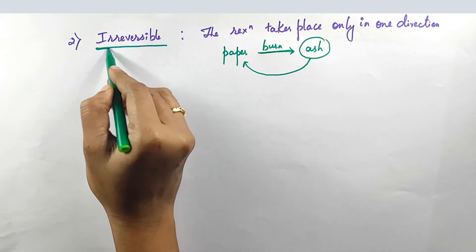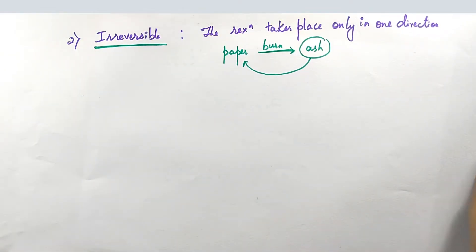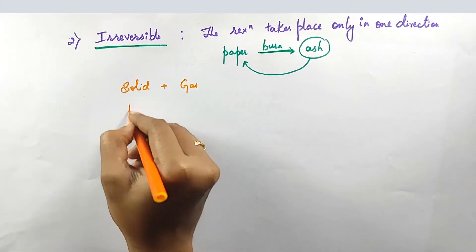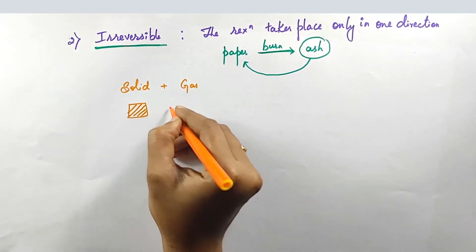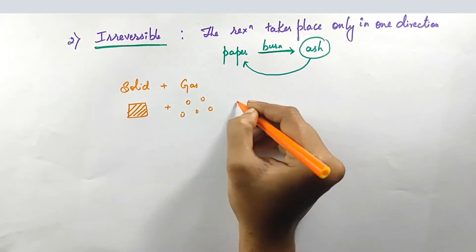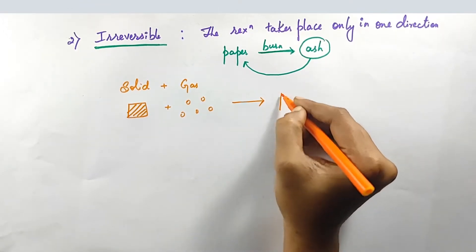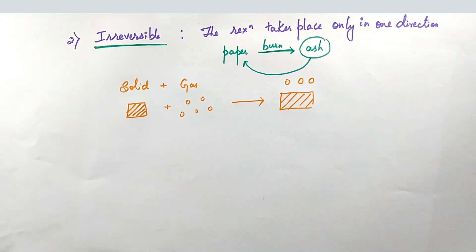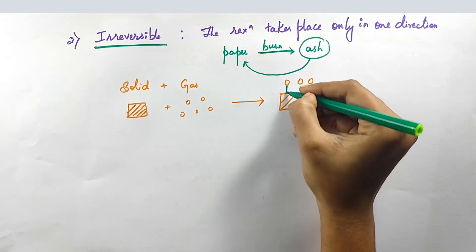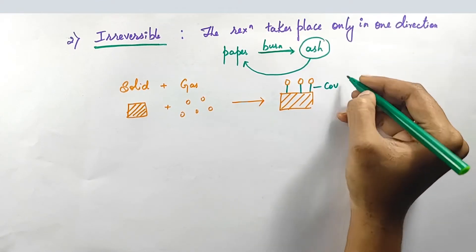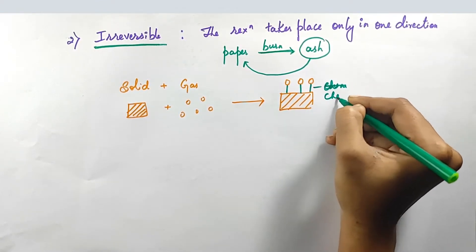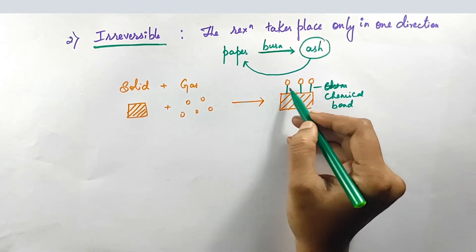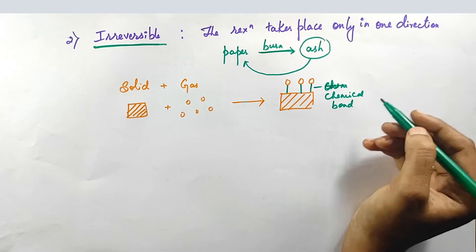Therefore, it is called irreversible in nature. Let us take the example based on adsorption. Consider a solid with gas. The gas molecules sit on the surface of the material by covalent bond or chemical bond — because it is chemisorption. The molecule sits on the surface by chemical bond, which may be covalent or ionic.